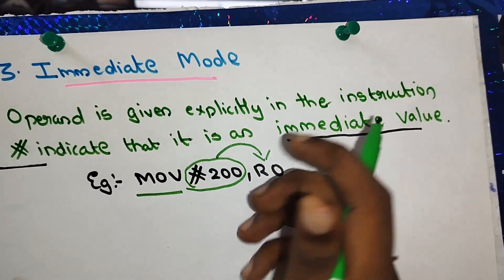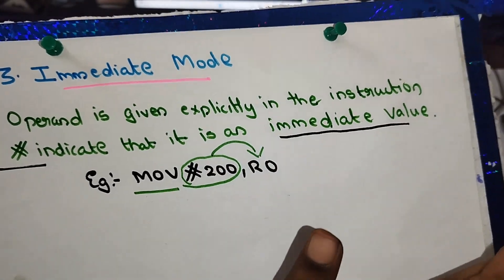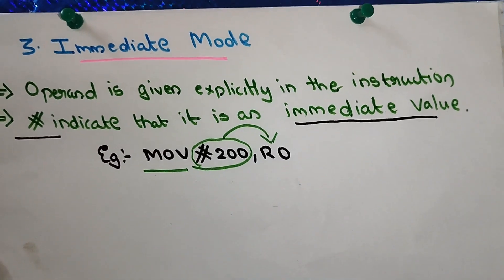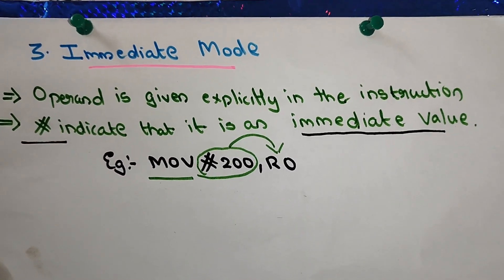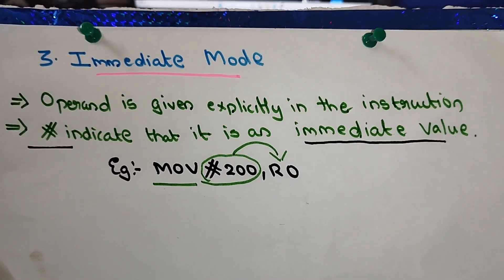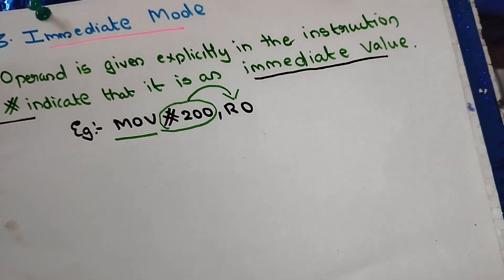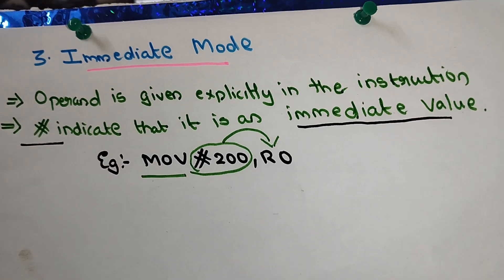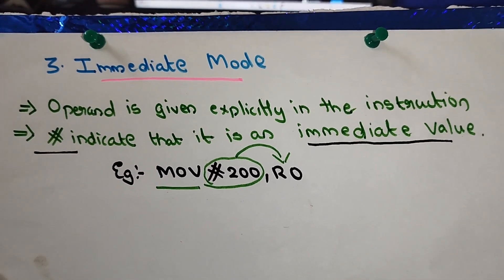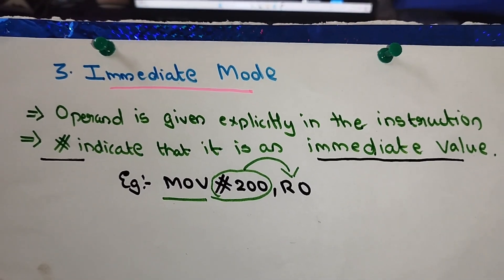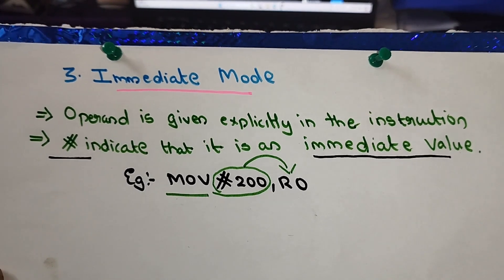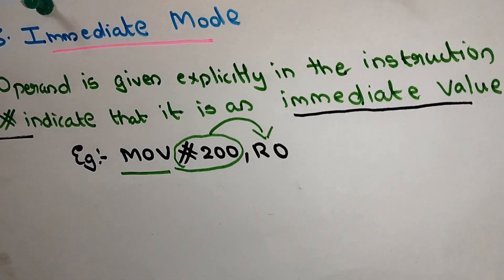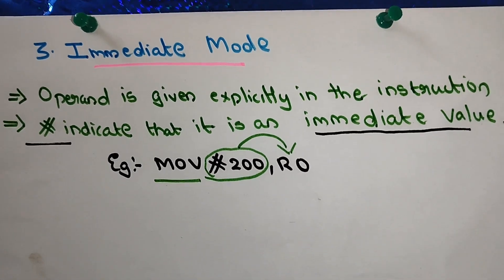In immediate addressing mode, the value — such as #200 or #300 — is directly specified in the instruction itself, rather than referring to a register or memory location.